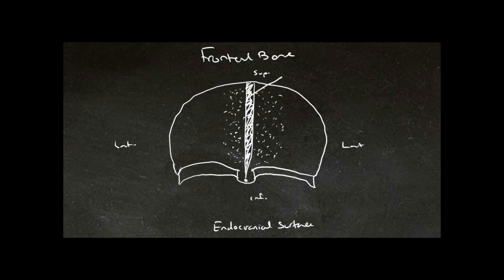Here in the middle, we have a sulcus for the sagittal sinus, and so we call this the sagittal sulcus. And here we have these little pits, and these are called arachnoid foveae.